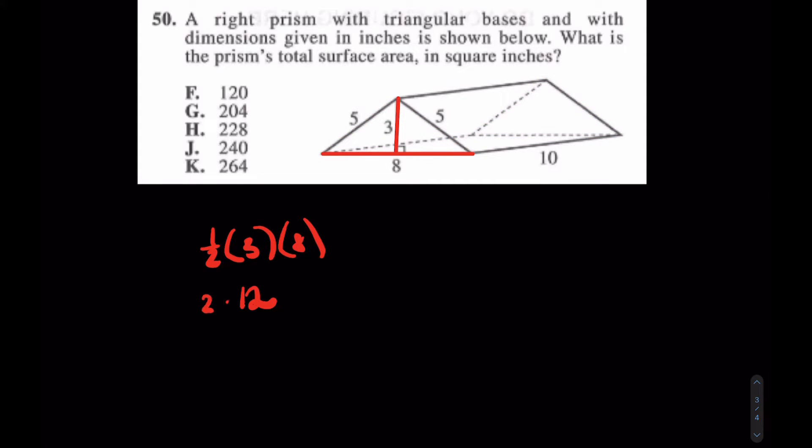Plus what about this bottom face? Well, this bottom face is eight times ten and it's just a rectangle. So that's just going to be eight times ten, plus 80. And how many of those do I have? Just one.